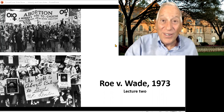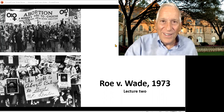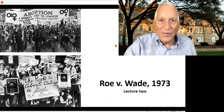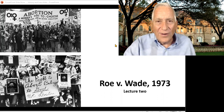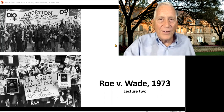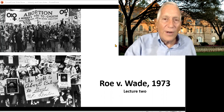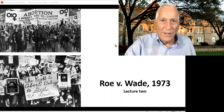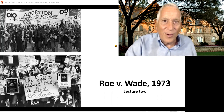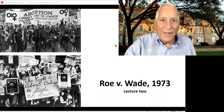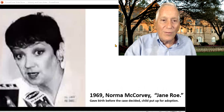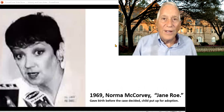Welcome back to the second lecture on Roe v. Wade. In the previous lecture, we talked about Griswold versus Connecticut, all the Comstock laws, and this notion that we have to have some personal privacy in order for all of our constitutional rights to be protected. And that was at issue when Roe v. Wade is brought up.